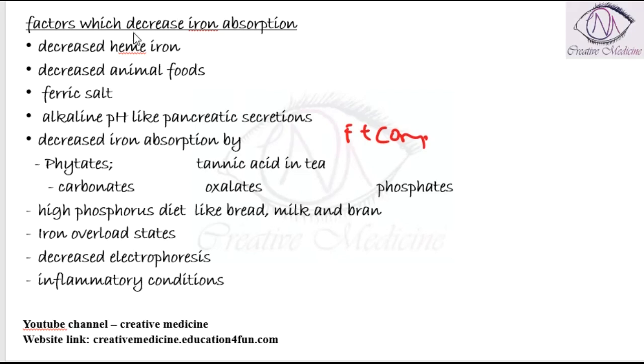Iron absorption is also decreased in high phosphorus diet like milk, bread, or bran. In these conditions iron absorption is decreased.